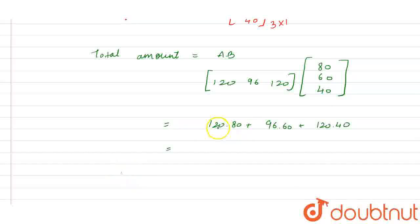After multiplying this, this will be 9,600, this will be 5,760, this will be 4,800. So after the addition, we will be getting 20,160 as the answer. This is the total amount the bookshop will get after selling all the books.